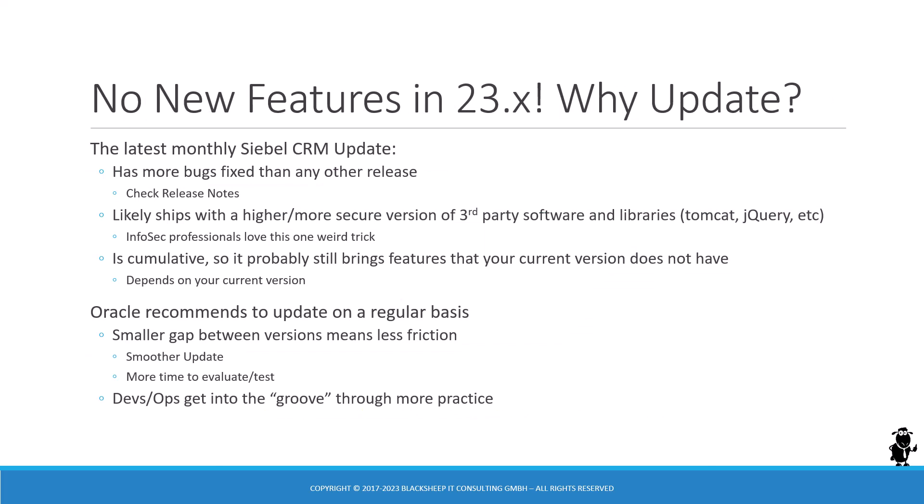You might say 23.8 is a boring release with no fancy new features — so why update? Why not wait for a later update or an earlier one? Well, just a reminder: the latest monthly Siebel update, which at the time of this recording is 23.8, has more bugs fixed than any other release. So if you want the most secure release, take the latest one. Check the release notes that Oracle provides for news on which bugs have been fixed.